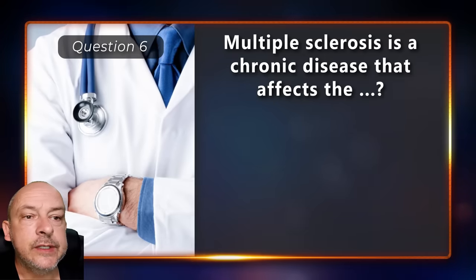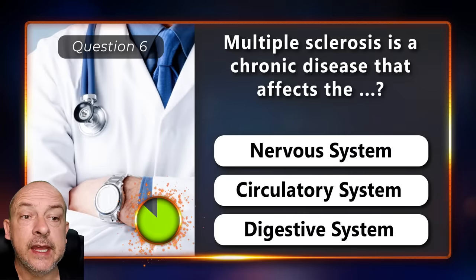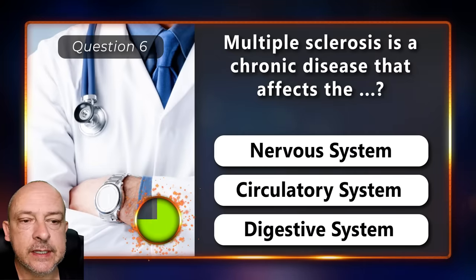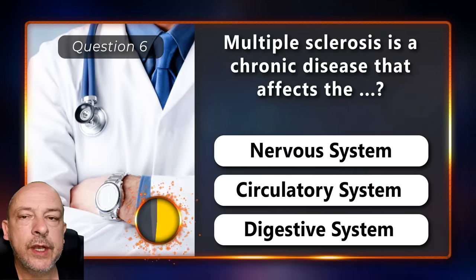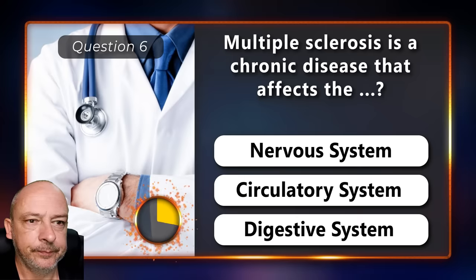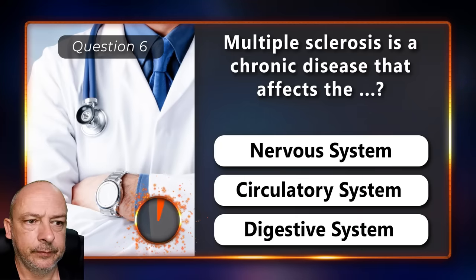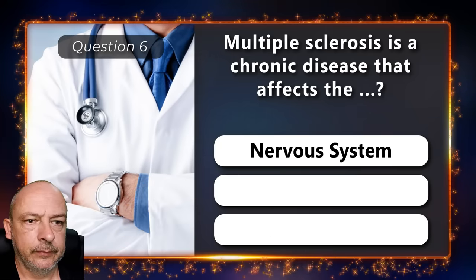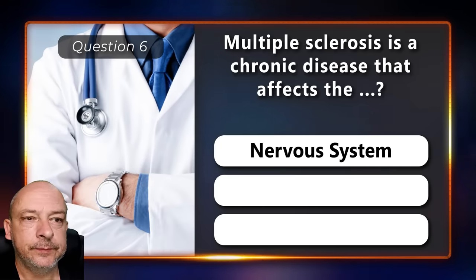Multiple sclerosis is a chronic disease that affects the nervous system, circulatory system, or the digestive system? It affects the nervous system.